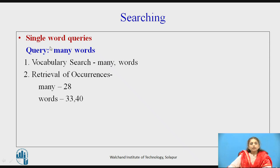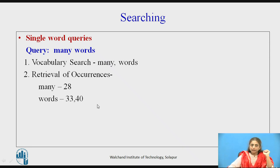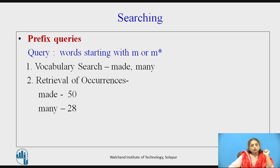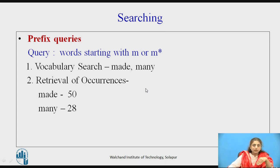For a single word query such as 'many words', each keyword is searched separately in the vocabulary and occurrences are retrieved. Any data structure like a B+ tree or hashing can be used for storing the vocabulary. For a prefix query such as 'm*', the search finds the first keyword starting with 'm' in the sorted vocabulary and proceeds sequentially until a word not starting with 'm' is found. All retrieved words are returned with their associated occurrences.